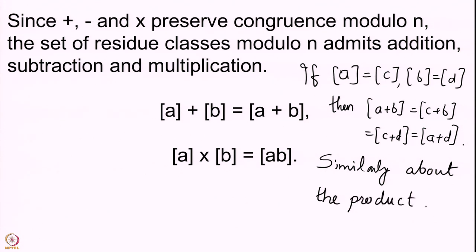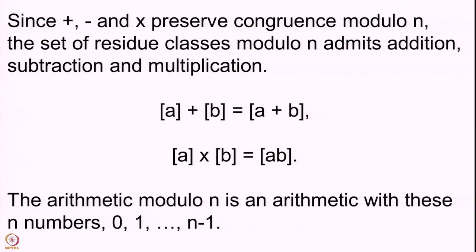These are things which can be checked quite easily and which we have actually checked, so I will not go over them again. One final remark before we stop: the arithmetic modulo N is an arithmetic with these N numbers — 0, 1, 2, 3, all the way up to N−1 — where addition, subtraction and multiplication are taken with respect to the congruence relation modulo N. That is the theme of our course on congruences, and we will explore this further. I hope to see you again in the next lecture. Thank you.